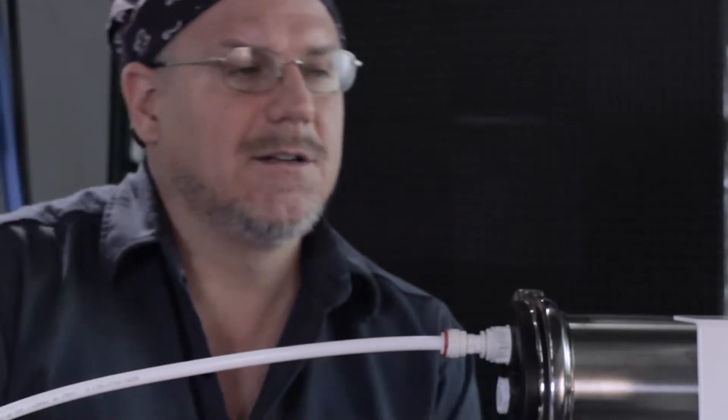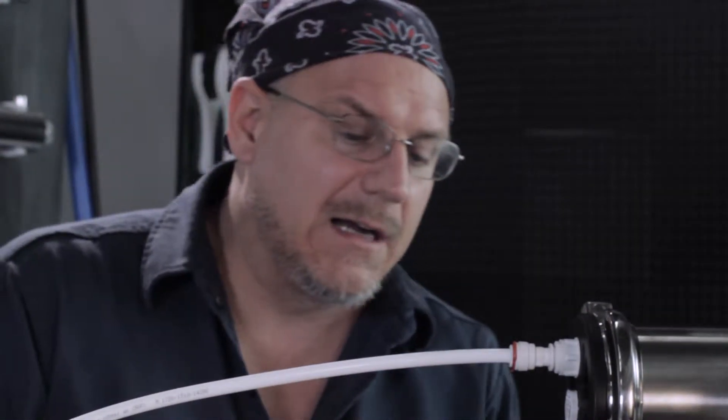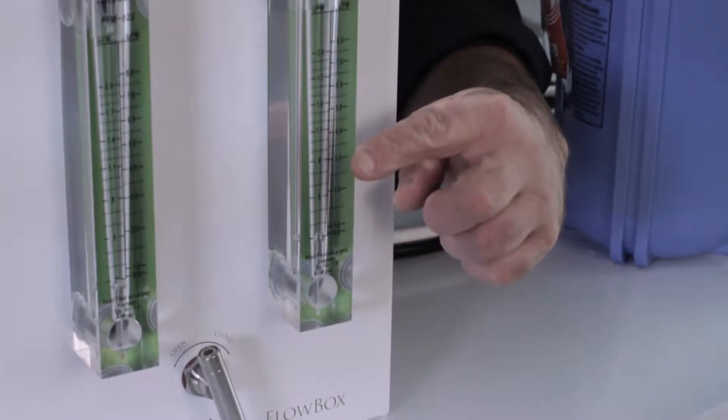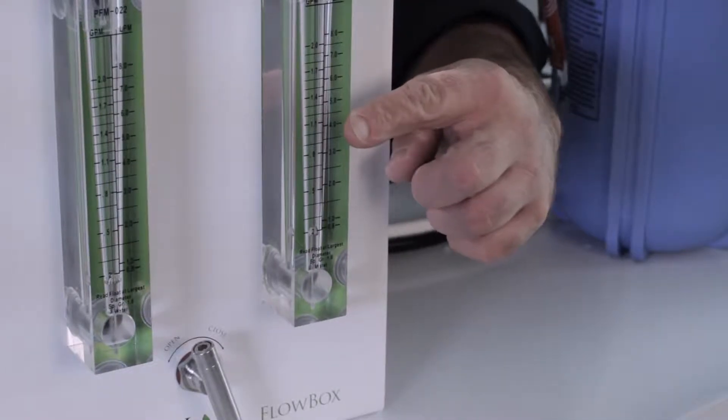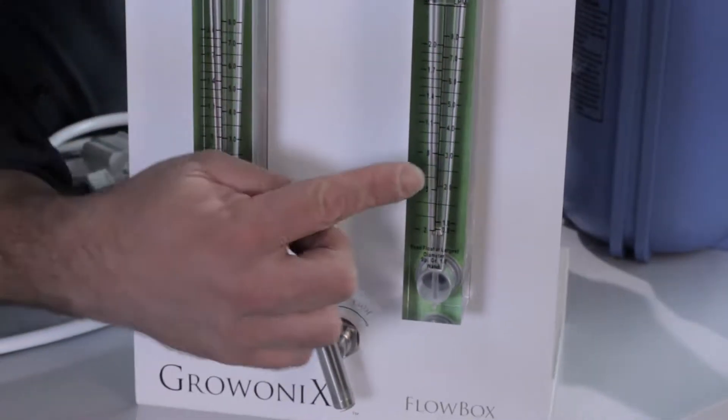Plus, as you're running an EX or GX 600 or 1000 with a Flowbox, you're gonna see you're making a certain amount of RO water. Let's say 1.3 gallons a minute, wherever that is on the flow meter.